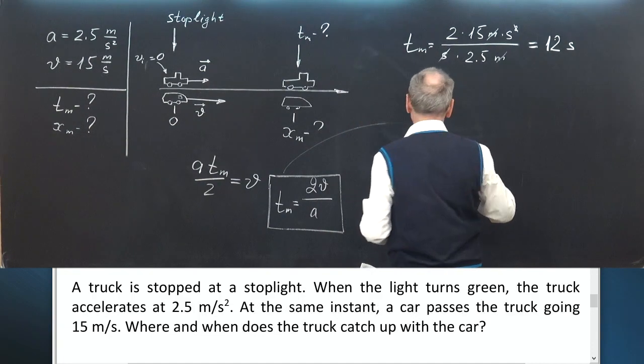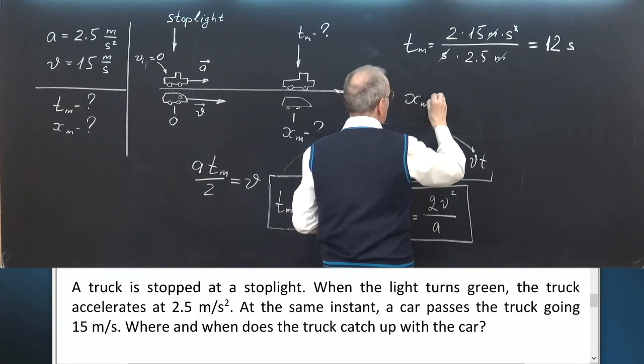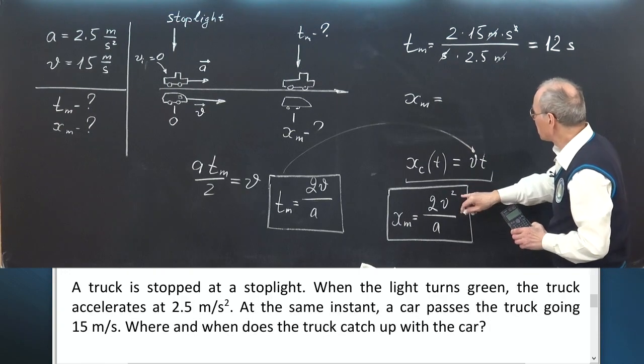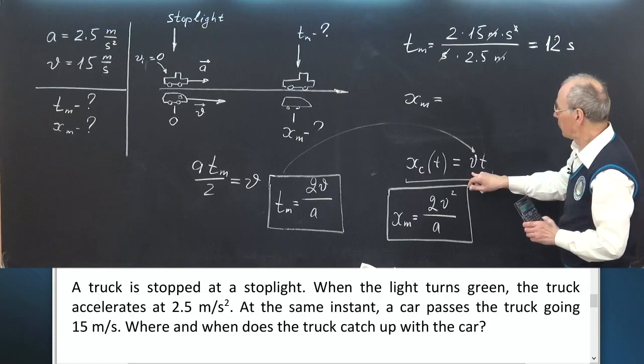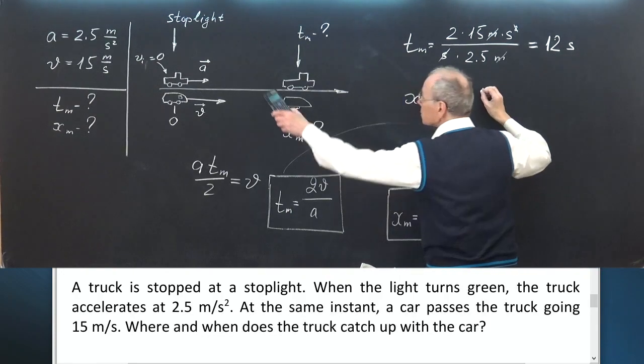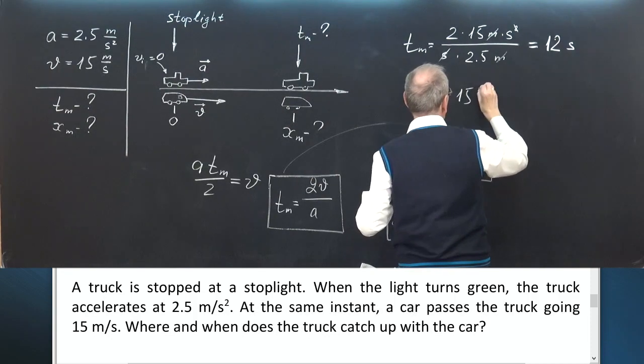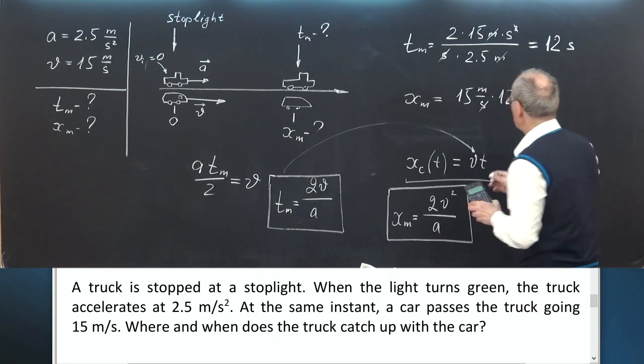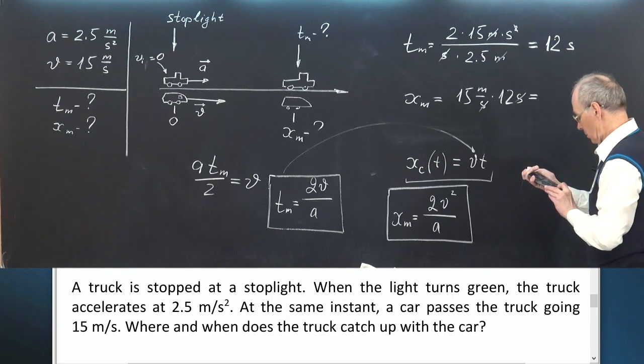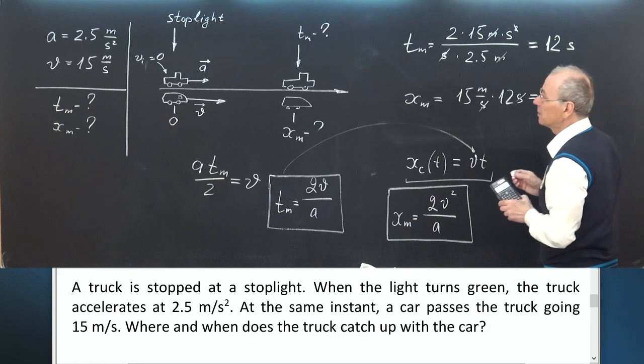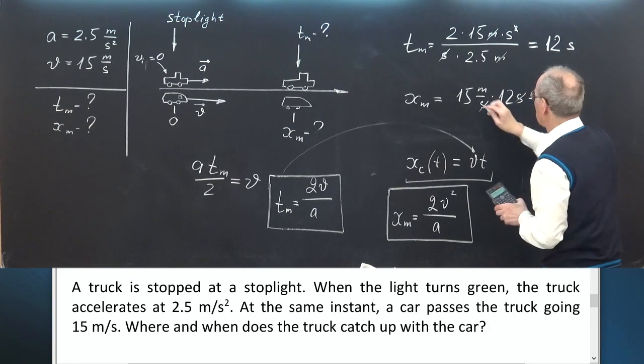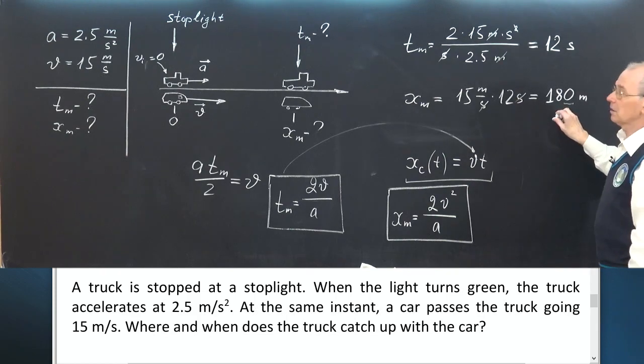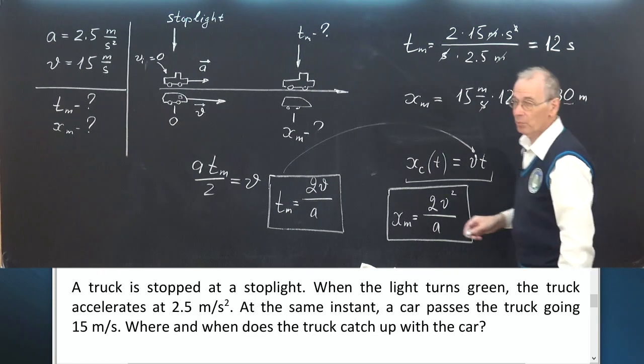The next: x_m coordinate of meeting point. Let us simply multiply T_m by V. V is 15 meters per second times 12 seconds. We have 180 meters. By the way, this digit is not significant. The problem is solved.